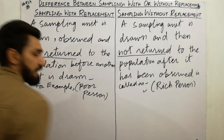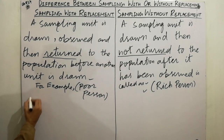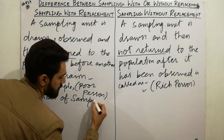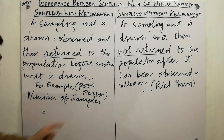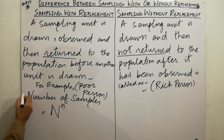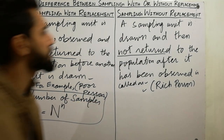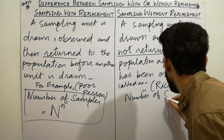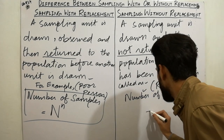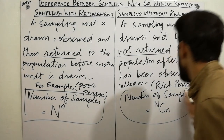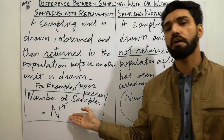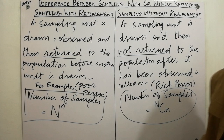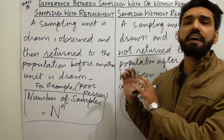The last and very important point: the number of samples. The number of samples in sampling with replacement is N raised to the power n (capital N raised to power small n). The number of samples in sampling without replacement is N-choose-n, that is the combination capital N C small n.